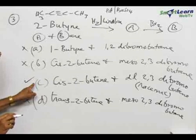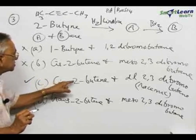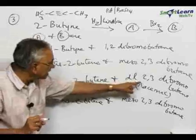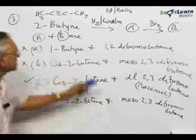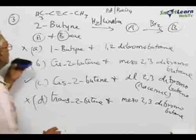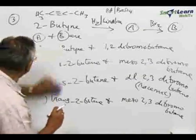So the correct answer for this question is C, which is cis-2-butyne which on further bromination will lead to a racemic product. This can be represented in the form of an equation like this. I will rub it off and give it in the form of an equation.